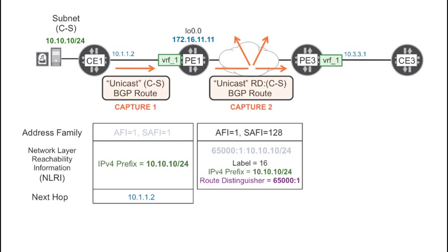When PE3 wants to send a unicast packet to the customer source, it typically needs to push two MPLS labels: the VPN label and the transport label of the label-switched path that goes from PE3 to PE1. Why PE1? Because it's the next hop of the BGP route, 172.16.11.11. In this workshop, you use LDP to signal the MPLS labels for transporting unicast traffic. Later in this workshop, you will use a different protocol to signal the tunnels for multicast transport.